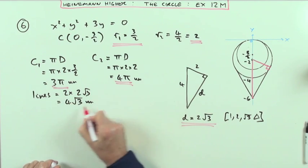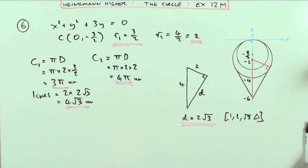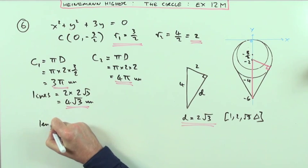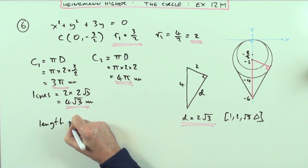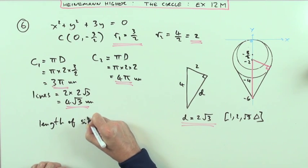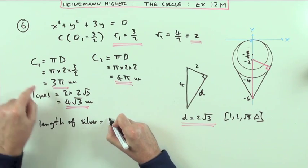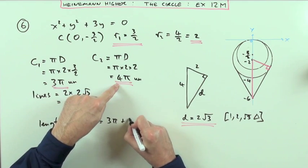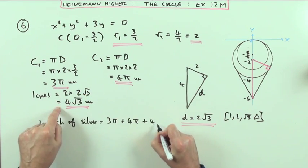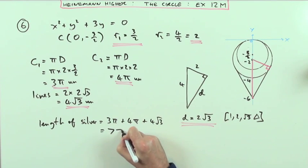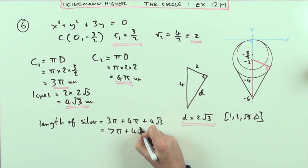Right, there's the three bits. Inner circle, outer circle, and the two lines. So what's the total length? Add them up. So the total length of wire, total length of silver, let me just say, will be 3π plus 4π plus 4 root 3, which is exactly 7π plus 4 root 3.